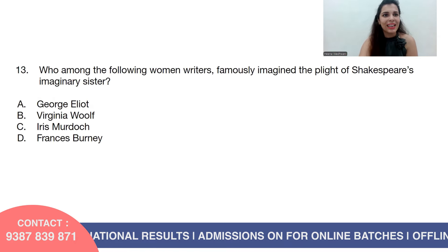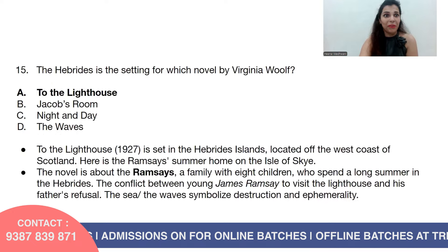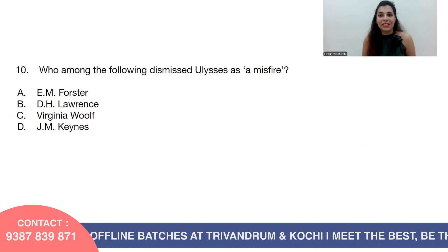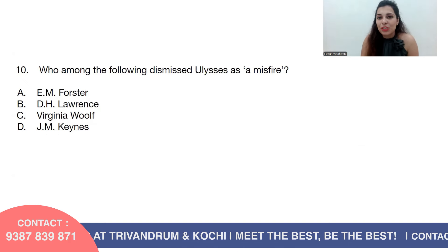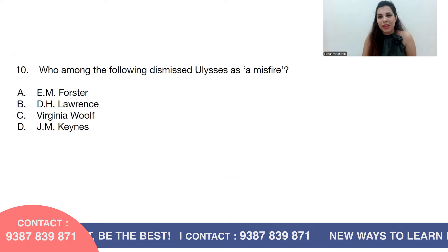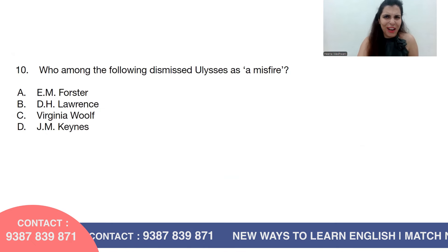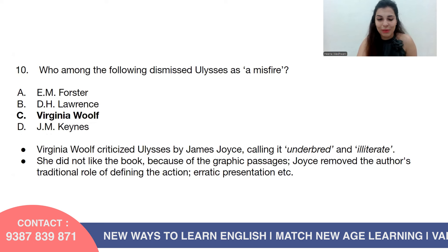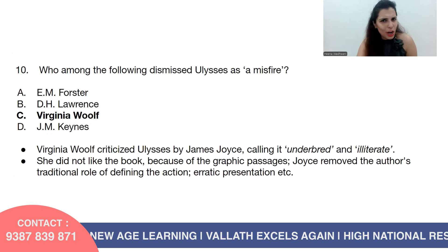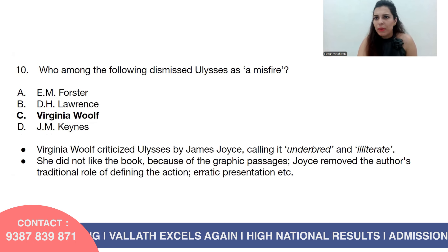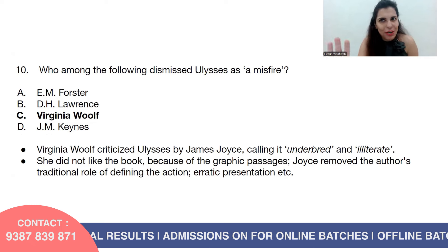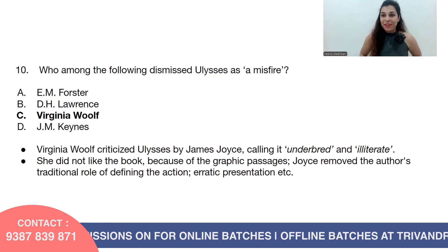Question number ten: Who among the following dismissed Ulysses as a 'misfire'? Option A, E.M. Forster; option B, D.H. Lawrence; option C, Virginia Woolf; or option D, J.M. Keynes. The answer is Virginia Woolf — she didn't like it. Woolf criticized Ulysses by James Joyce, calling it 'underbred and illiterate.' She disliked it because of the graphic passages, because Joyce removed the author's traditional role of defining the action, and because of the erratic presentation.